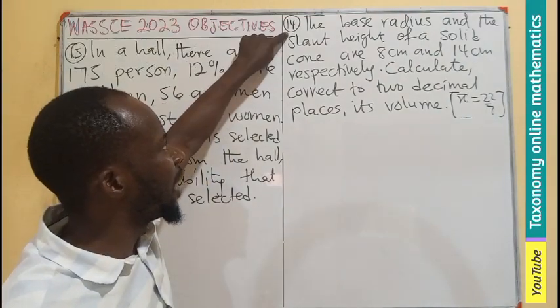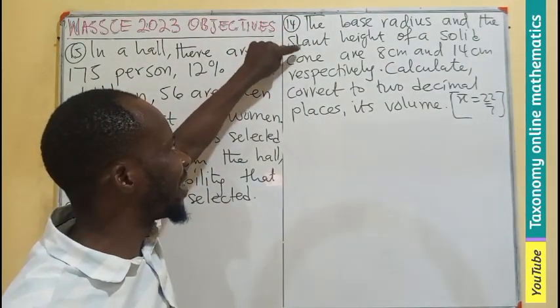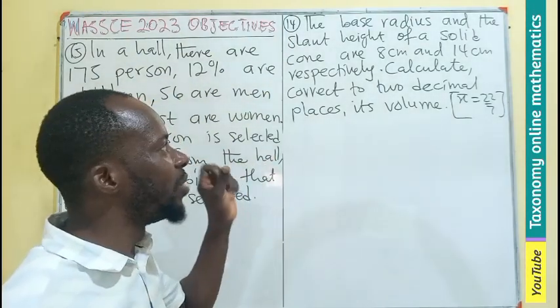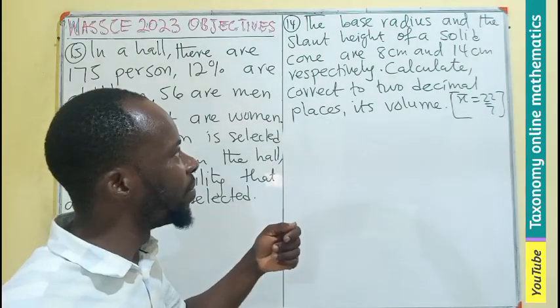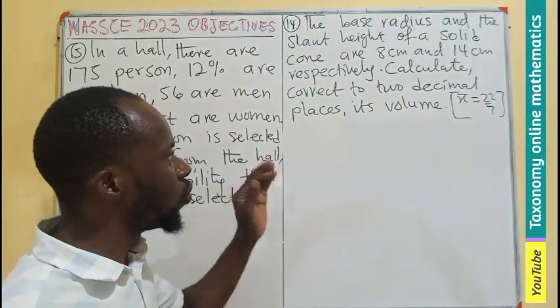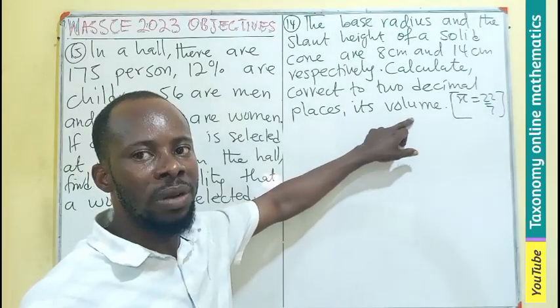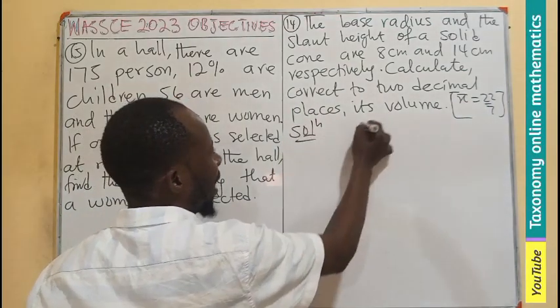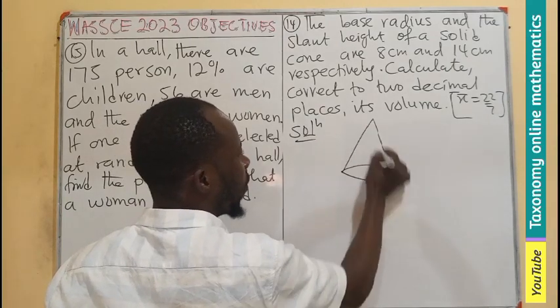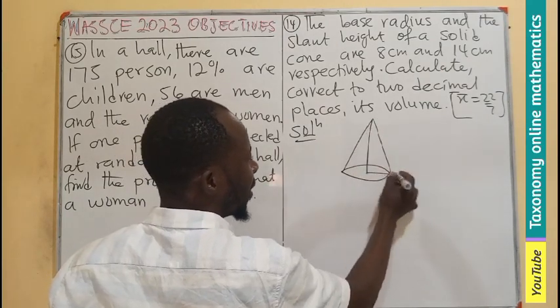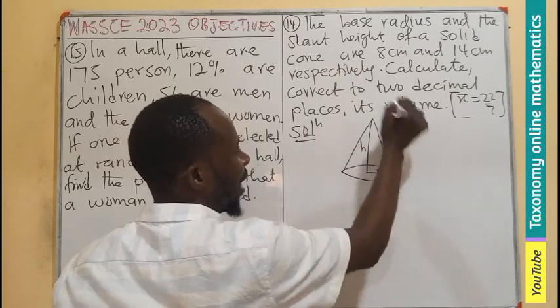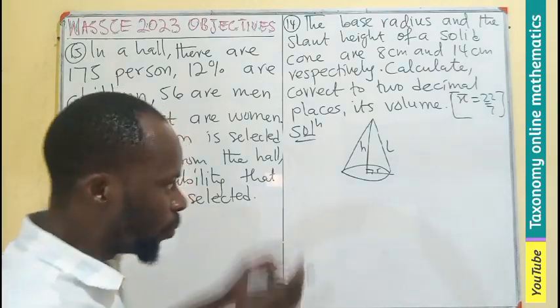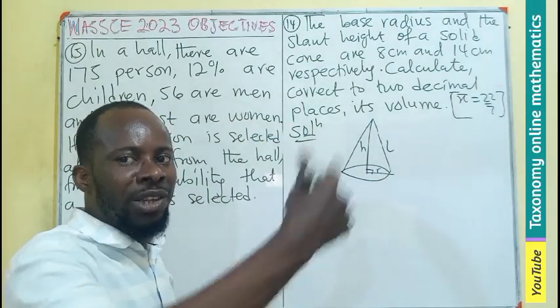Question 14. The base radius and the slant height of a solid cone are given as 8 cm and 14 cm respectively. Calculate correct to two decimal places the volume of the cone. Let's make a sketch. A cone will be in this form, with radius, height, and slant height producing an angle of 90 degrees. That triangle will be a right angle triangle.